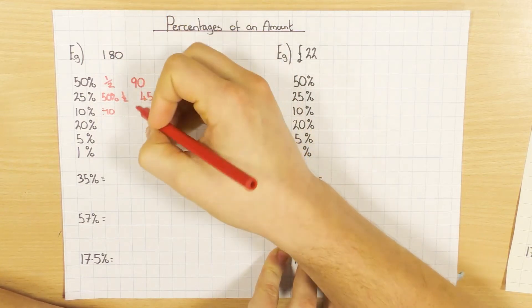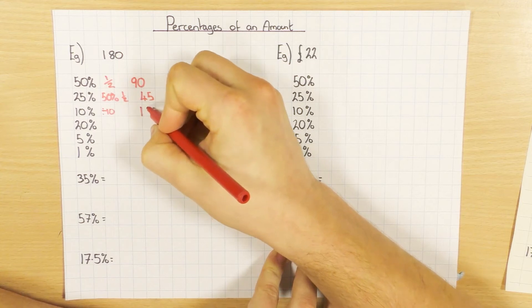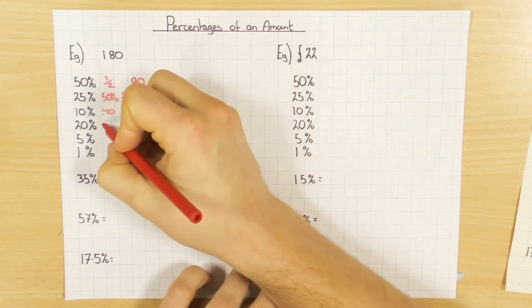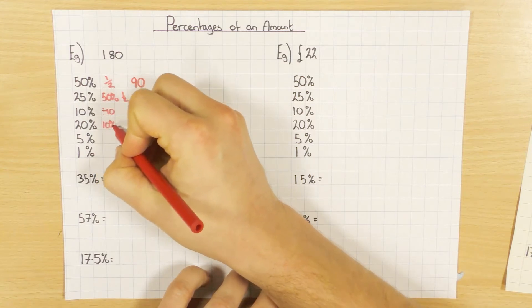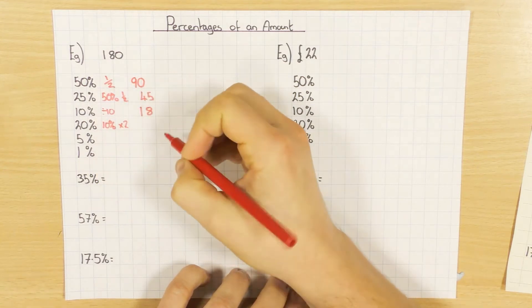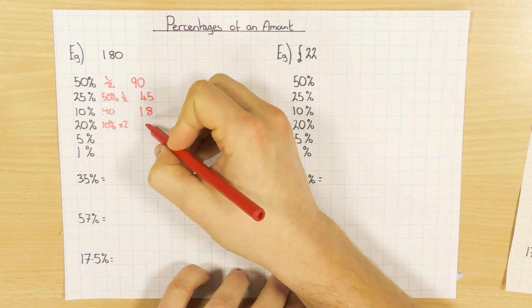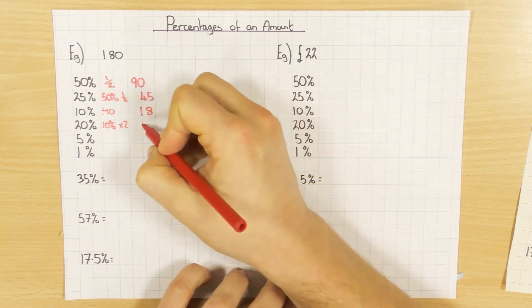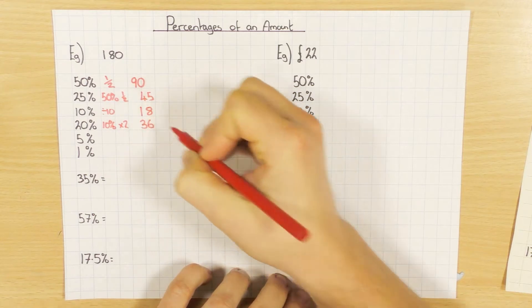To find 10%, we divide by 10. So 180 divided by 10 gives us 18. To find 20%, we find 10% and double it, times it by 2. So in this case, I'll have 18 times 2, or 18 plus 18, whichever way you want to do it. And obviously you'll have 36.